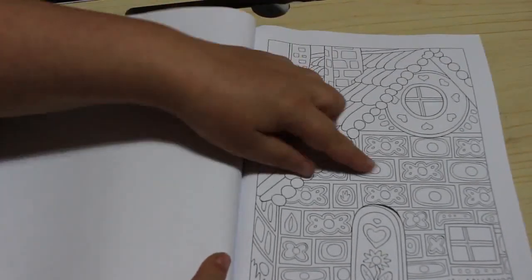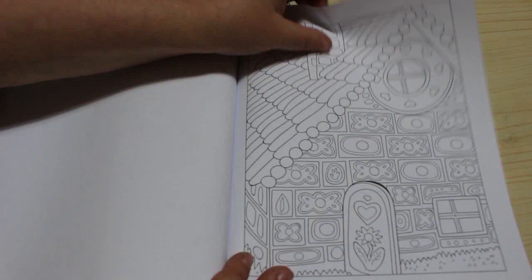So you can do the gingerbread and then you can do all different color decorations like with icing. Green and red and white icing. And that's the last picture.